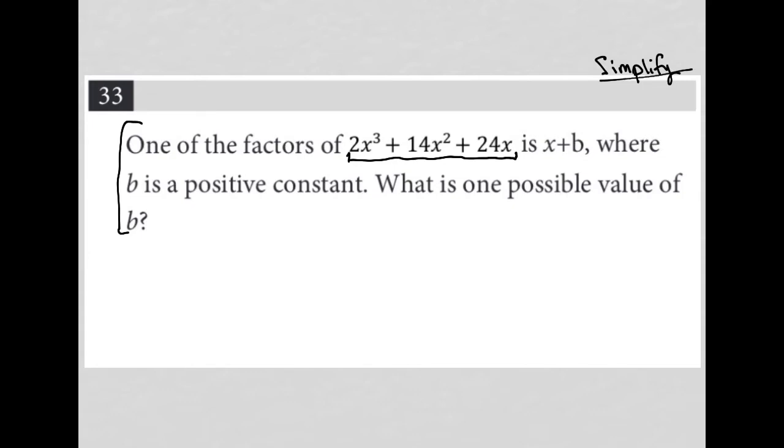So this question says one of the factors of 2x³ + 14x² + 24x is x+b, where b is a positive constant. What is one possible value of b?